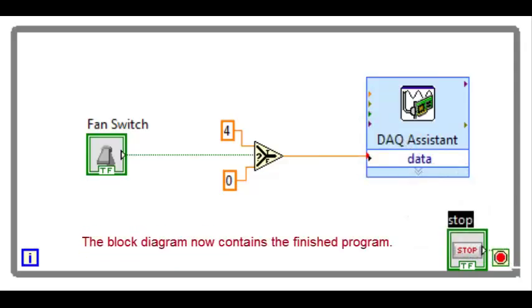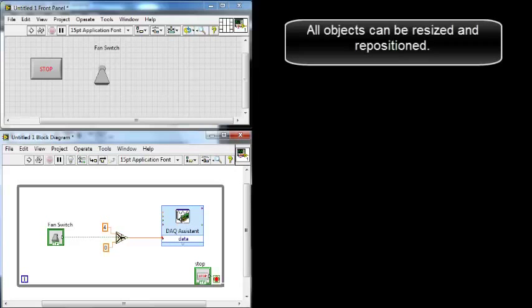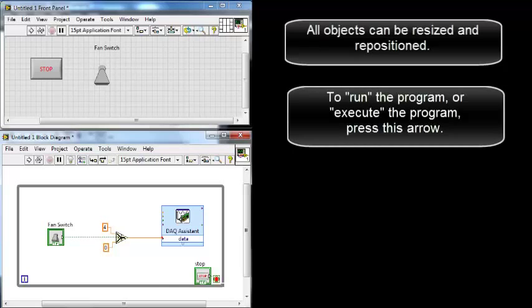The block diagram now contains the finished program. All objects can be resized and repositioned. To run the program or execute the program, press this arrow.